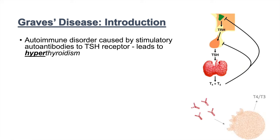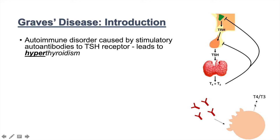With Graves' disease, stimulatory autoantibodies target a person's own TSH receptors on thyroid cells, stimulating those cells to produce and release T4 and T3. That T4 and T3 then negatively regulates both the hypothalamus and the anterior pituitary, leading to a suppressed level of TSH. So in Graves' disease, we get high levels of T4 and T3 and low levels of TSH because of this negative feedback regulation.